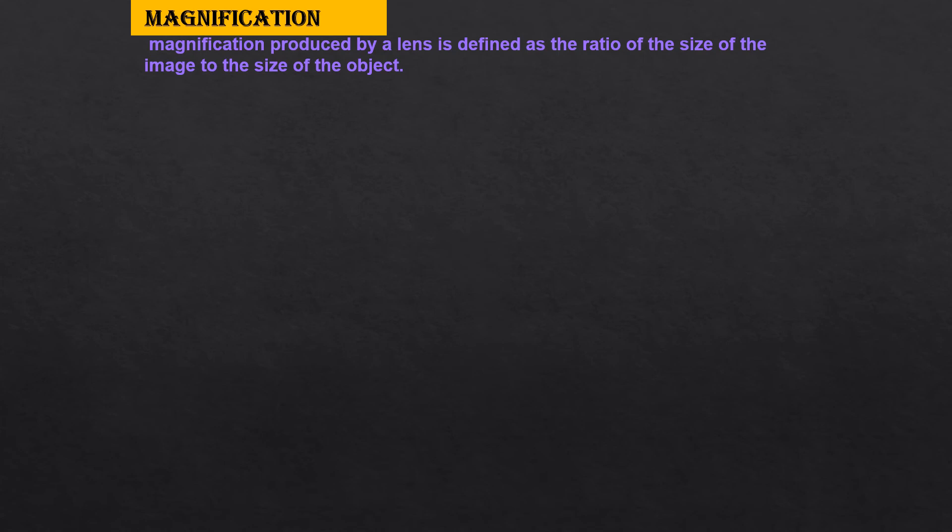Magnification is the ratio of size of the image to the size of the object. Magnification produced by a lens is also defined as ratio of image distance to object distance, that is V to U.